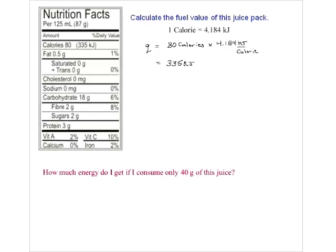To boil one mole of water takes 40 kilojoules - that's about a quarter-filled drinking glass. Yet we're consuming 335 kilojoules from that juice pack. Put it in perspective: that's a fair bit of energy in that juice pack.